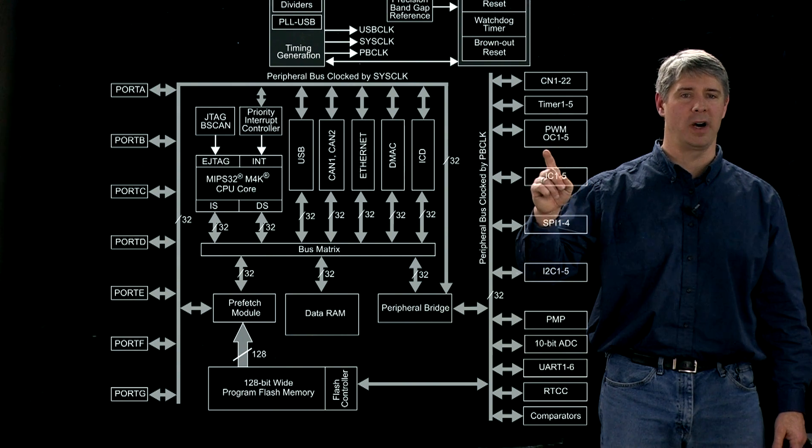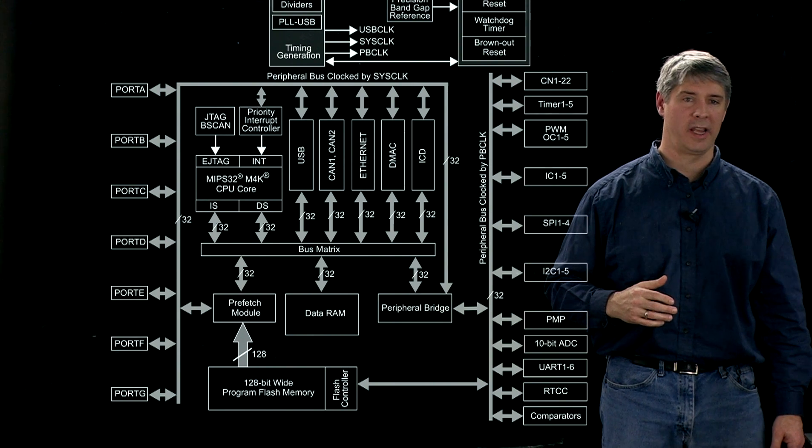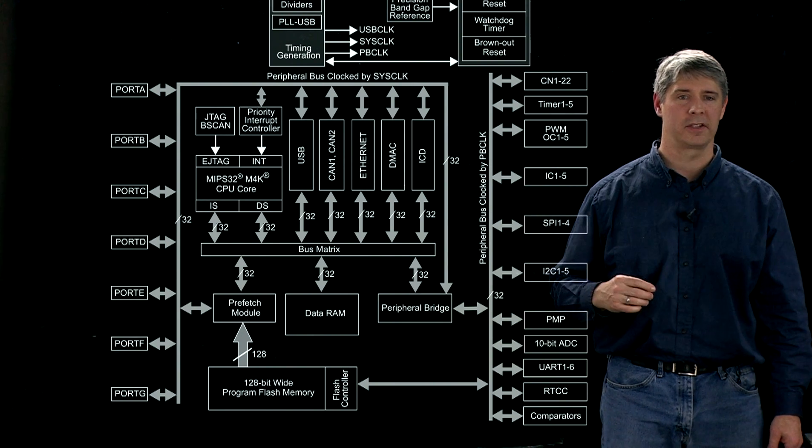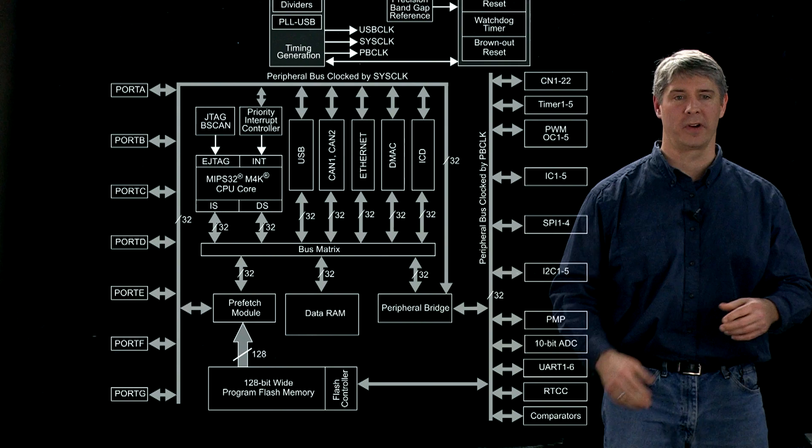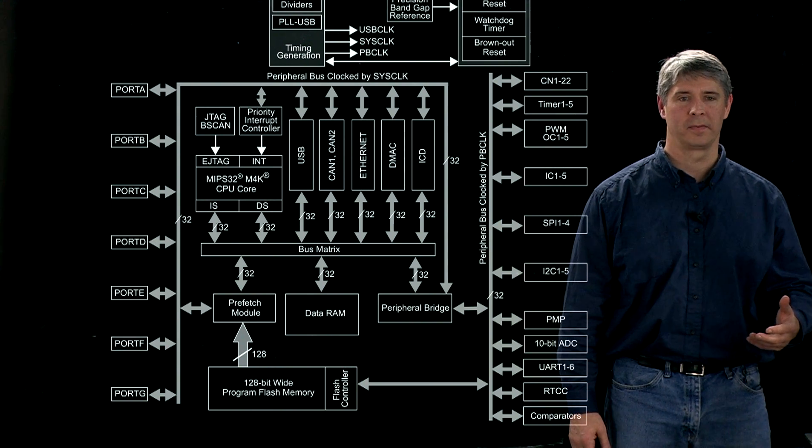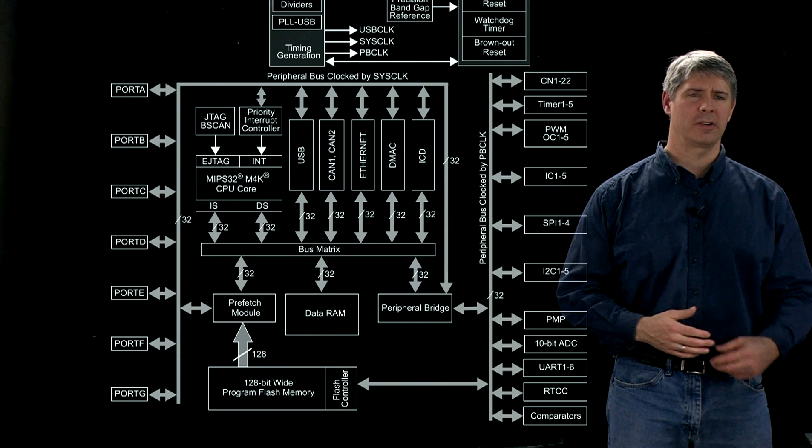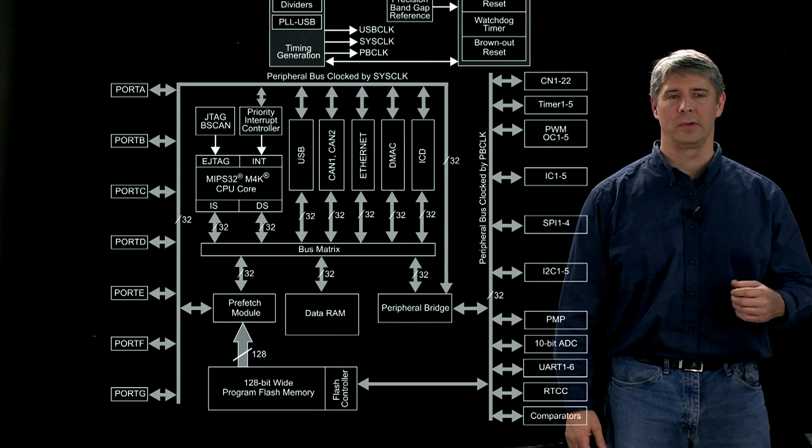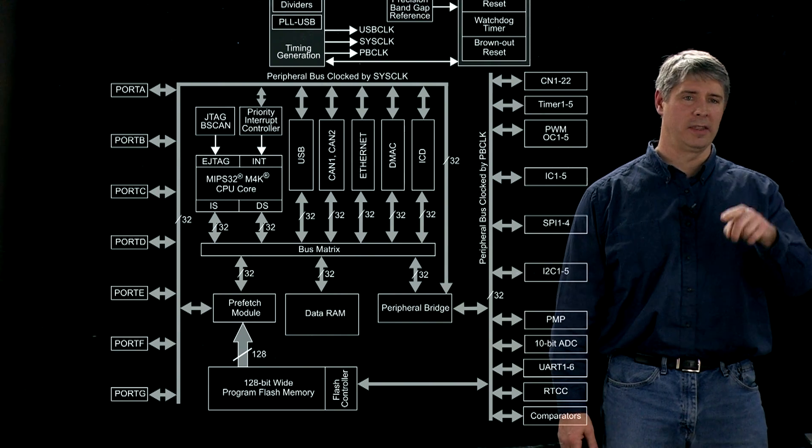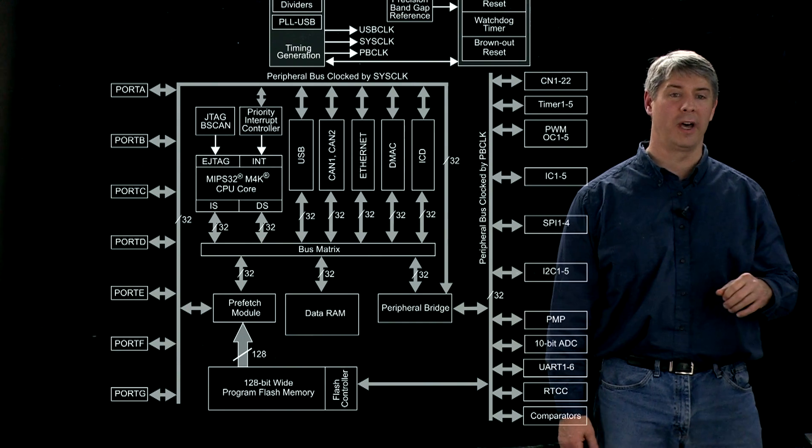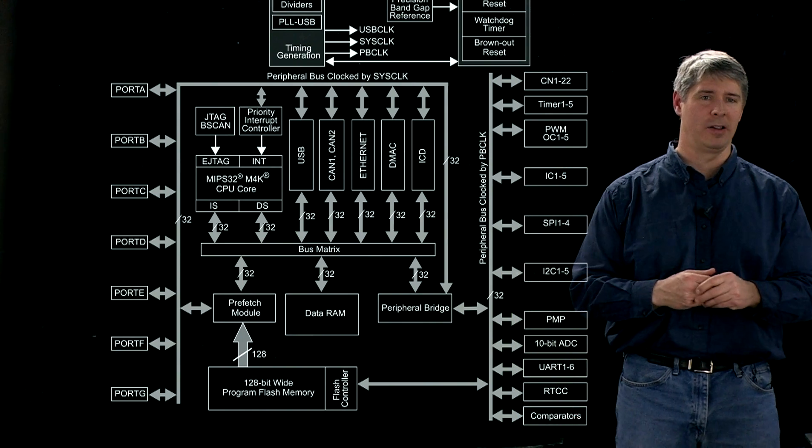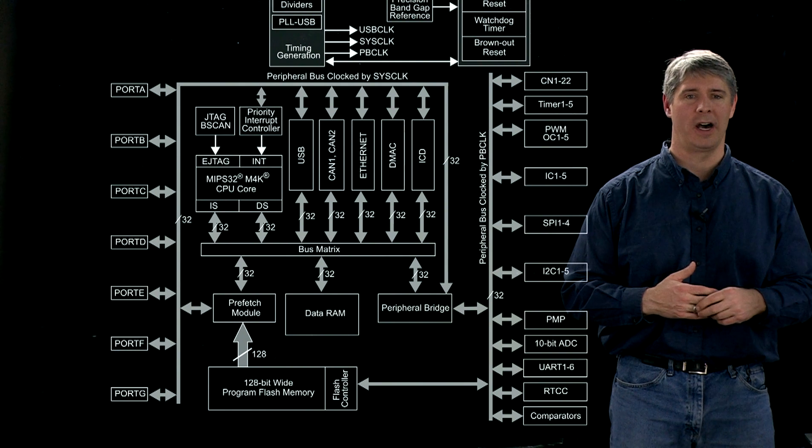We've got five pulse width modulation output channels here, or output compares. Those generate digital pulse trains that we use to drive motors. We also have input capture, and these are used to do precise timing if we have a digital signal coming in going from low to high. We can use that to precisely time how long the signal was low or how long it was high.